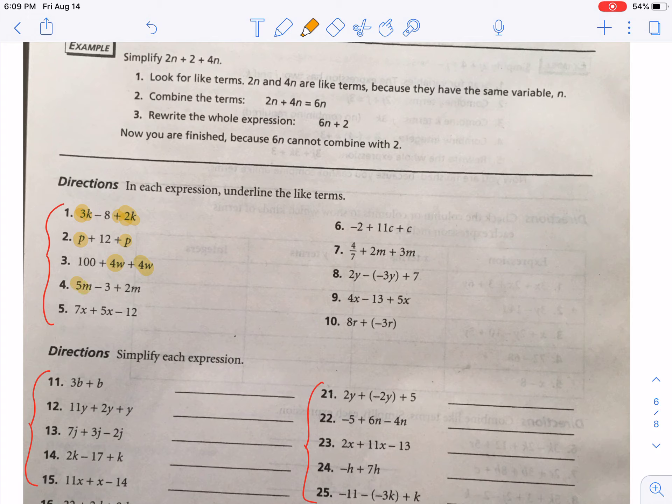They don't have to have the same coefficient as we saw in number one. And we're also going to see that in number four. So we have two terms that have an m: 5m and 2m. And in number five, we have a 7x and a 5x. I am going to ask that you do 6 through 10 on your own.